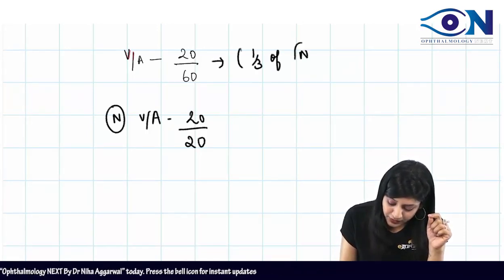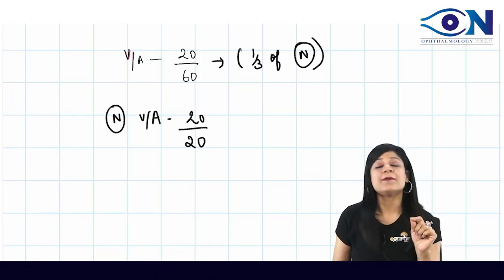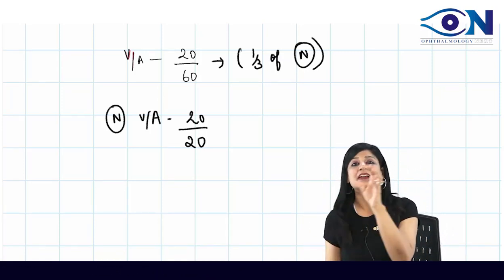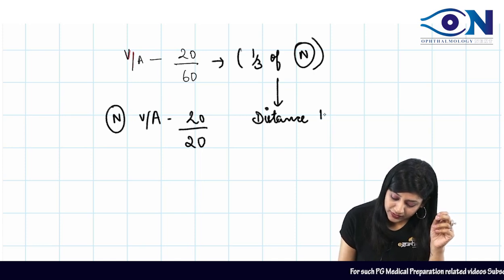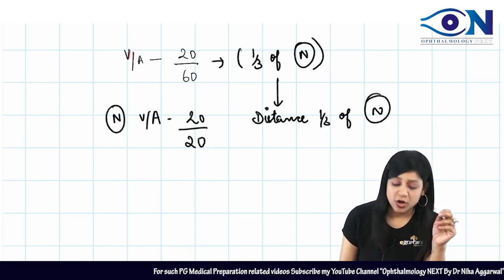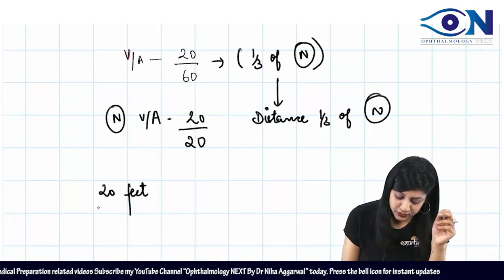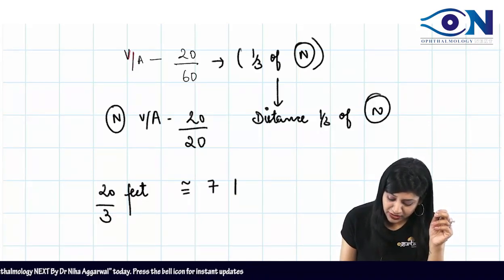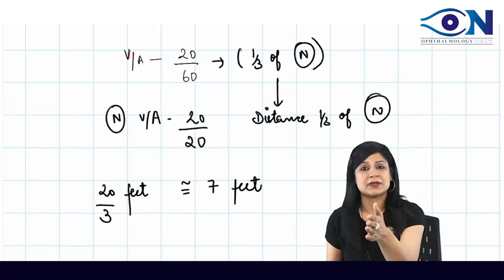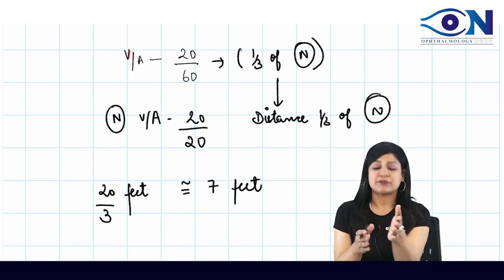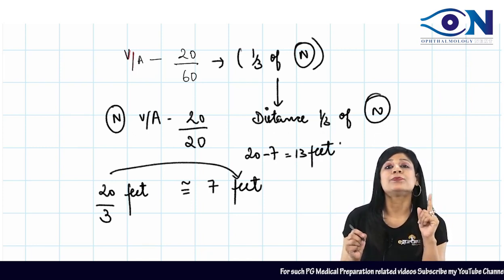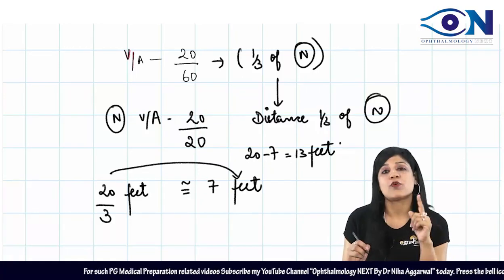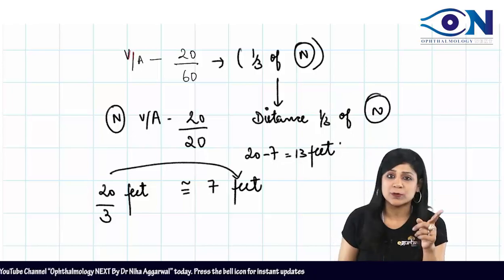If this child wants to see the line seen by a normal person, the distance should also be one-third of normal. Normal is 20 feet, so one-third is approximately 7 feet. The child is standing at 20 feet and needs to be at 7 feet, so 20 minus 7 equals 13 feet. The child has to walk 13 feet forward to see that normal visual acuity line. The answer is 13 feet.